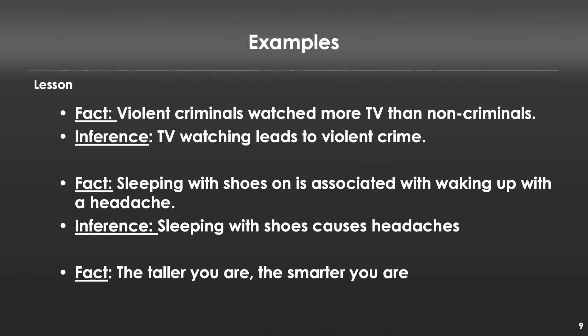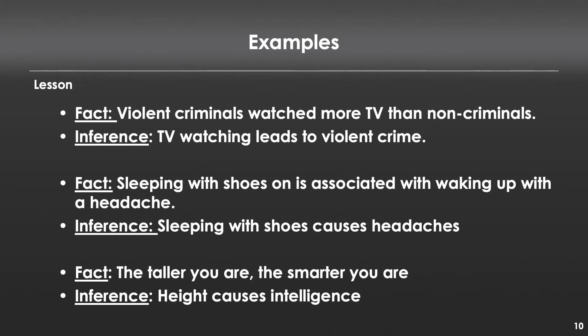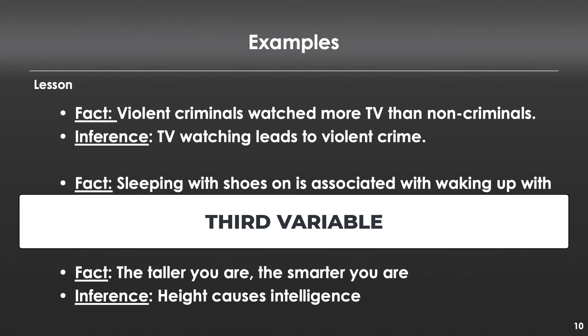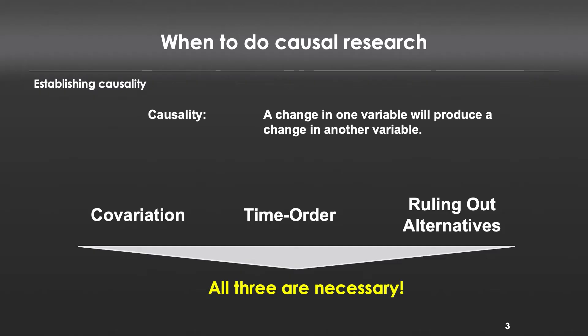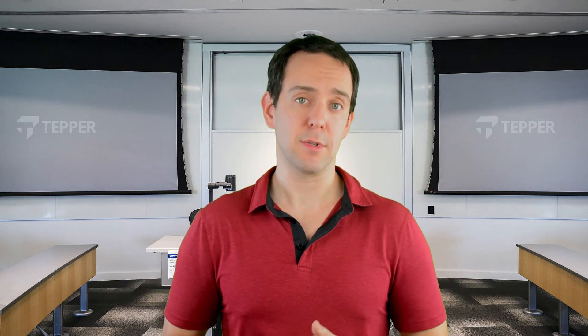And finally, the taller you are, the smarter you are. The inference there is that height causes intelligence. But much like the previous example, there's a third variable that much better explains this: age causes intelligence. It turns out children are short and not very smart, and as they get older, they get taller and they get smarter. In other words, there are other things that better explain that relationship. In all of these examples, there are other things that better explain the causal relationship, and we can't rule those things out, meaning we cannot make that causal claim.